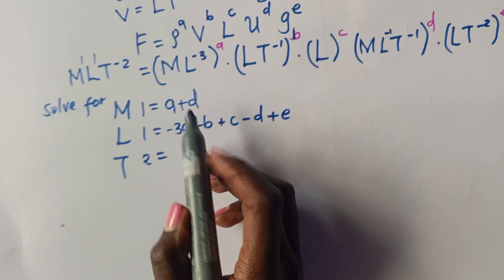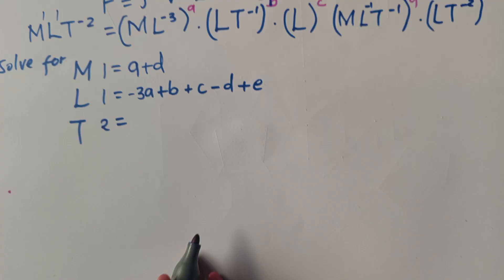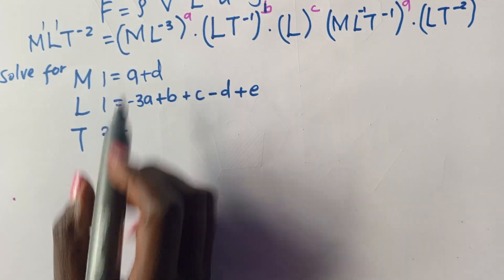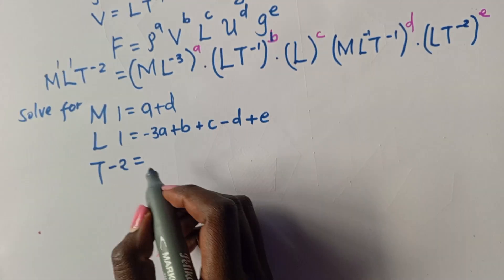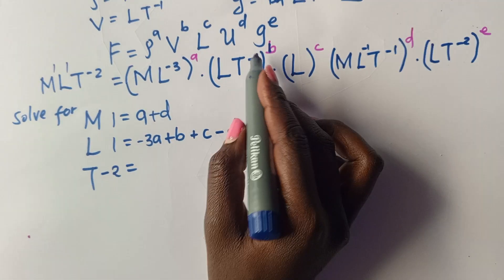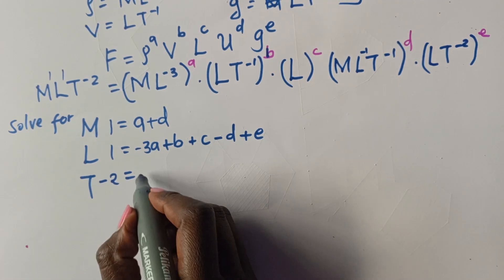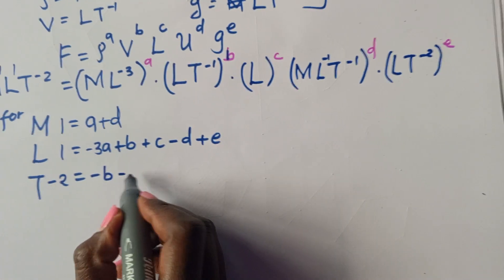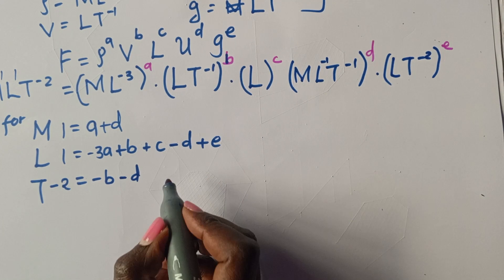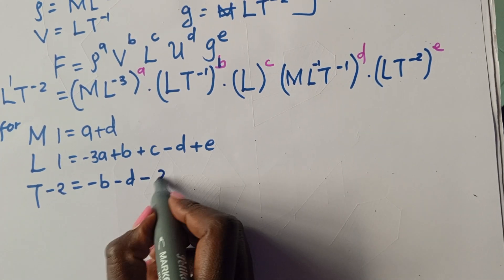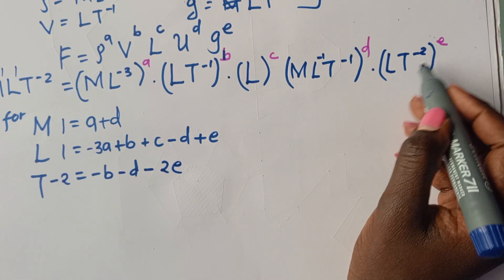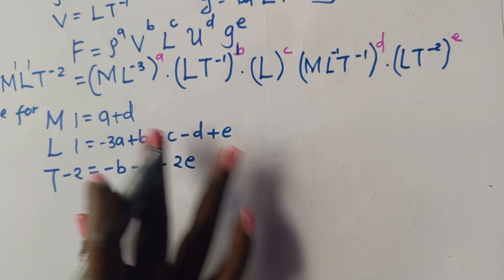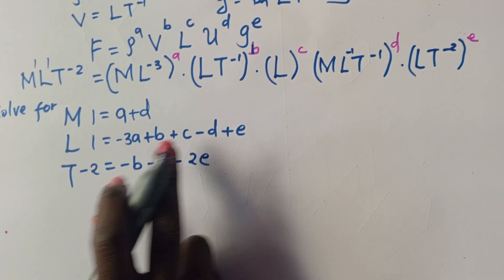For T: the left-hand side is T raised to negative 2. Collecting T powers from the right-hand side gives: negative 2 = negative B minus D minus 2E. We now have five unknowns: A, B, C, D, and E.